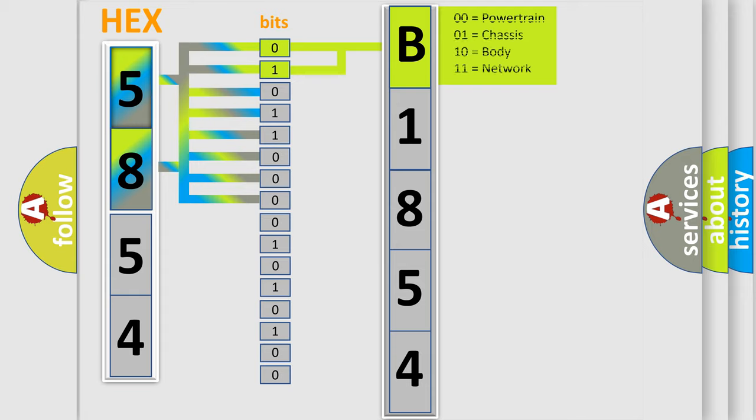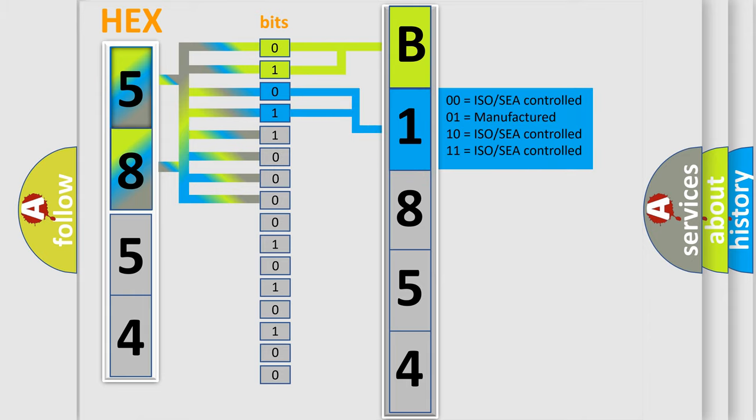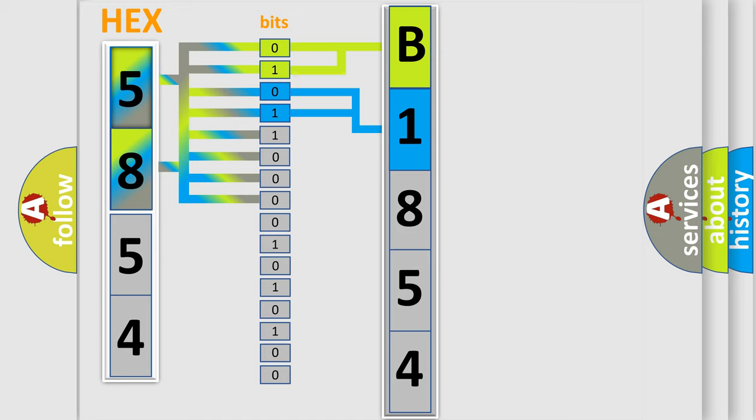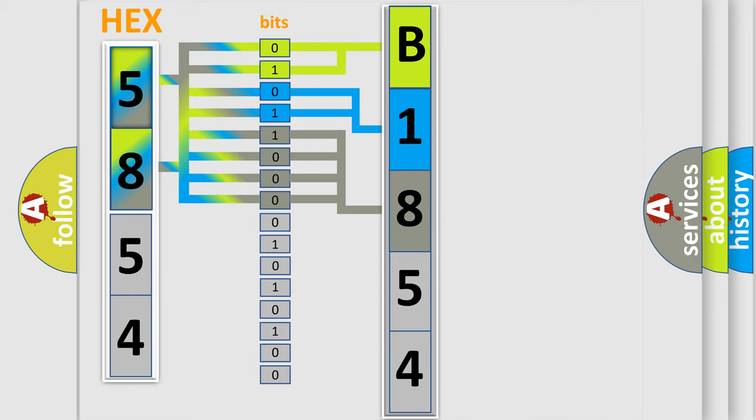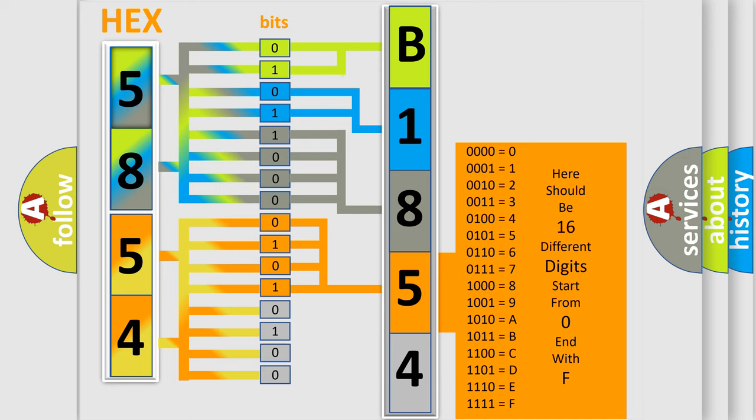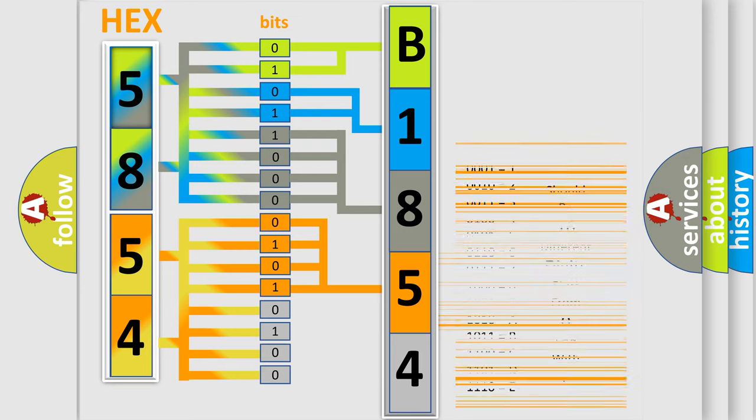By combining the first two bits, the basic character of the error code is expressed. The next two bits determine the second character. The last bit styles of the first byte define the third character of the code. The second byte is composed of a combination of eight bits. The first four bits determine the fourth character of the code, and the combination of the last four bits defines the fifth character.